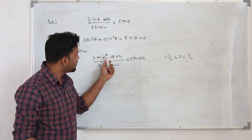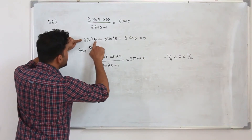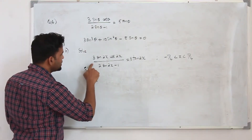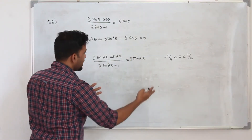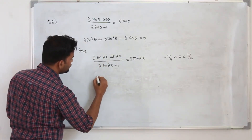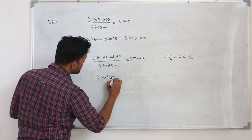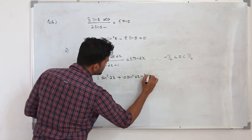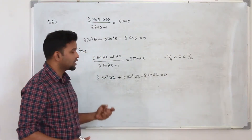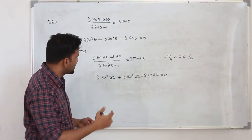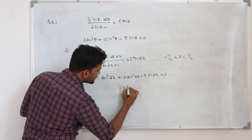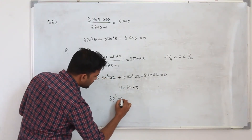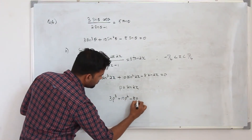That tells us when you simplify this, you will get the same expression but in terms of sin 2x. So this can be written as 3 sin³(2x) + 10 sin²(2x) − 8 sin(2x) = 0. This is a cubic function. If you take sin 2x as p, you get 3p³ + 10p² − 8p = 0.